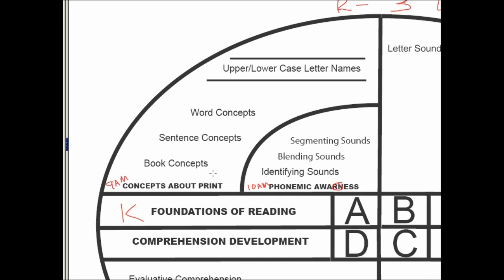So let's look at the first part of the foundations of reading: concepts about print. Concepts about print will follow from the easiest, broadest concept of something like book concepts to the more narrow concept of sentence concepts to even a more narrow concept like word concepts, ultimately ending, and I think you should put a star right here by upper and lowercase letter names, with this as one of the exit criteria.